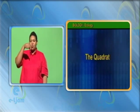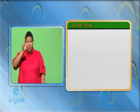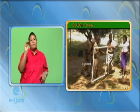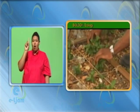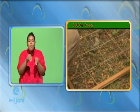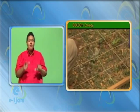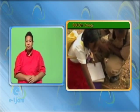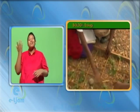The Quadrat is a square generally made of a wooden or metal frame of a specific area, usually 0.25 m² or 1 m². The Quadrat is used for sampling vegetation, slow-moving animals, as well as organisms present on the surface of rocks in a stream or on a seashore. The Quadrat may be used for random or systematic sampling.